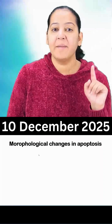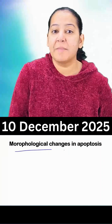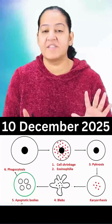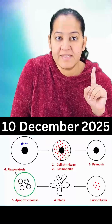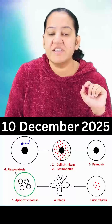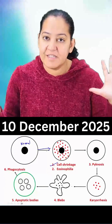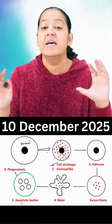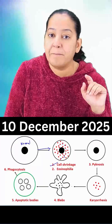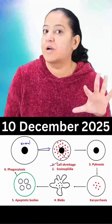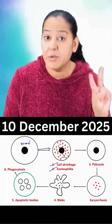Hello everyone, here I am telling you the morphological changes seen in apoptosis. There are six changes which occur in a sequence. You can see here is the normal cell. The earliest change is cell shrinkage — you can see the apoptotic cell is shrinking inside. Since the cell is shrinking, the multiple cell organelles come closer, giving a pink color to the cytoplasm. So the second change is eosinophilia.